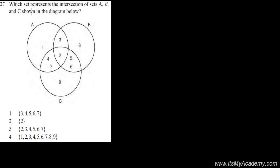Here I come with the next problem in Set Theory. This is related to Reading Venn Diagrams. The question is: which set represents the intersection of the set A, B, and C shown in the Venn Diagram, in the diagram below.